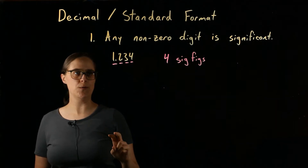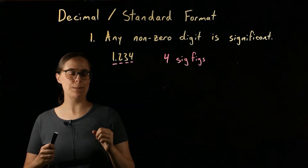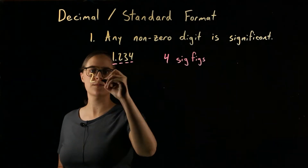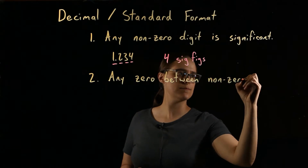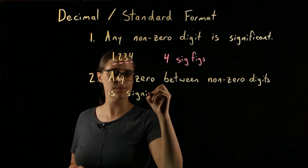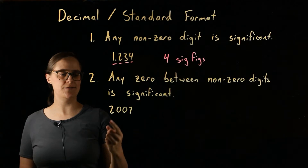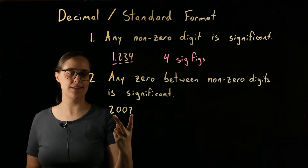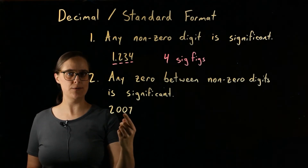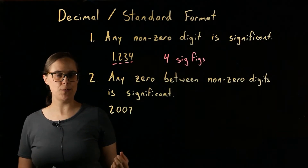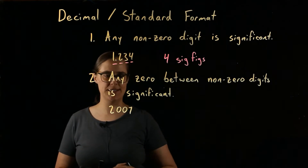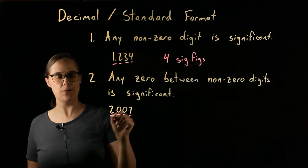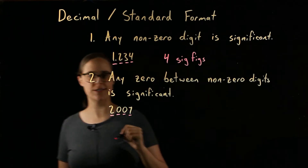Rule number 2: any zero between non-zero digits is significant. So in the value 2007, we have a 2 at the beginning and a 7 at the end — these are both non-zero digits. The zeros in the middle are both between non-zero digits, which makes them significant. That means all 4 of these digits are significant; we have 4 significant figures.